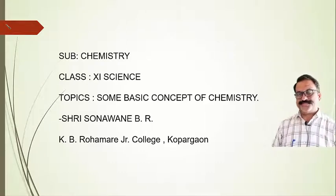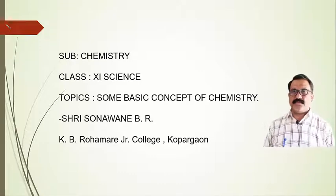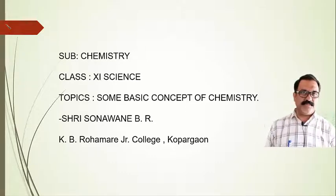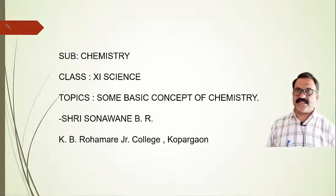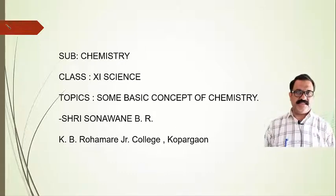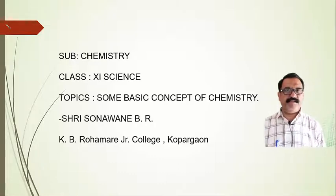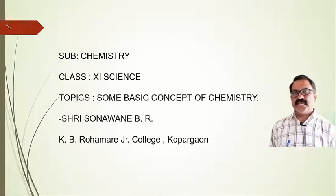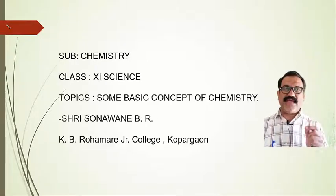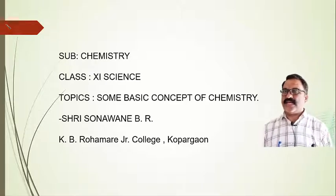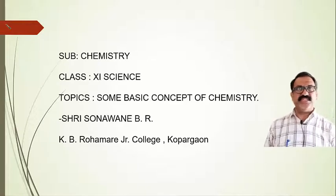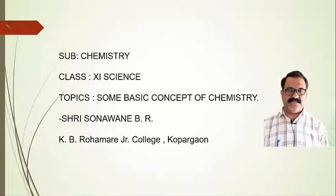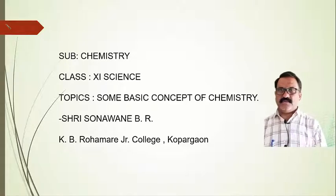Good morning students. In the last video, we learned about some basic concepts of chemistry, like the definition of chemistry, scope or importance of chemistry, and the various branches of chemistry. We also learned about the definition of matter as well as the classification of matter. Matter is anything which occupies space and has mass. On the basis of physical as well as chemical properties, matter can be divided into a number of types.